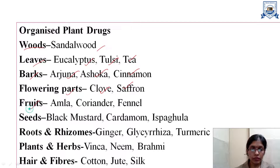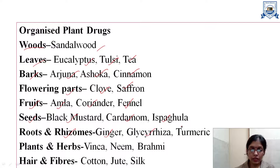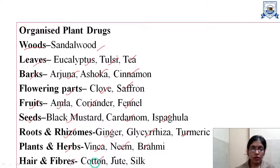Fruits — examples are amla, coriander and fennel. Seeds — examples are black mustard, cardamom and psyllium (isabgol). Roots and rhizomes — examples are ginger, glycyrrhiza and turmeric. Complete plants or herbs are also used, for example vinca, neem and brahmi. Hairs and fibers — examples are cotton, jute and silk.